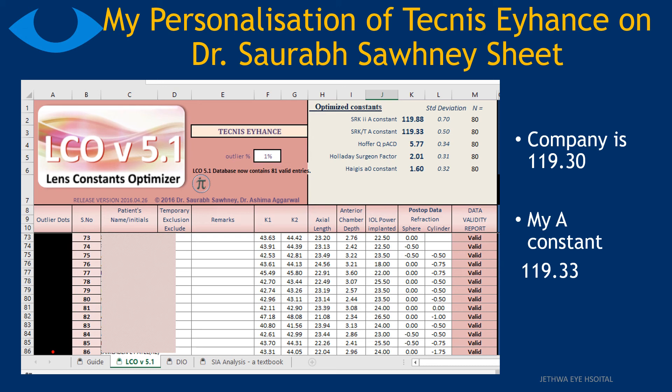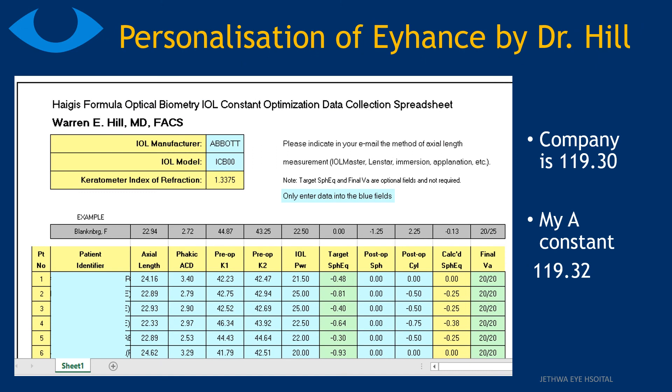My personalization of Tecnis 1-Piece on Dr. Saurabh Soni's Excel sheet showed that while the company provides an A-Constant of 119.30, my calculated A-Constant was 119.33, based on 120 patients. Similarly, using Dr. Warren Hill's website for the same Tecnis 1-Piece lens, the company's value is 119.3 and I obtained 119.32 — so the results from Dr. Saurabh Soni and Dr. Hill's methods are more or less the same.